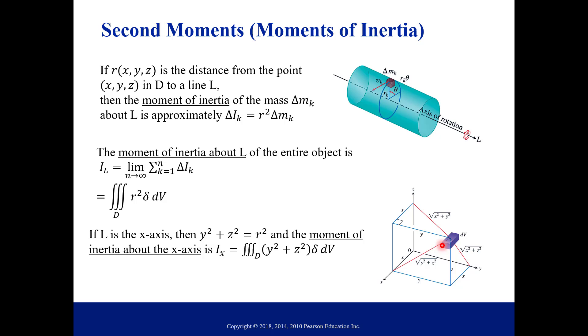The distance, we can just use the Pythagorean theorem. So this distance, think of a right triangle, is going to be the square root of Y squared plus Z squared. But then if we square that, because we end up wanting R squared in our integrand, we just have Y squared plus Z squared. And so the moment of inertia about the X axis, written as I sub X, is our triple integral over our region D, where the integrand is now Y squared plus Z squared times our density delta, dV.